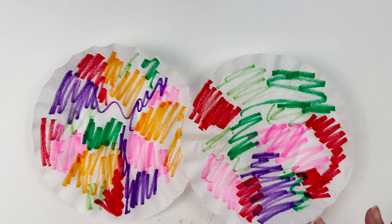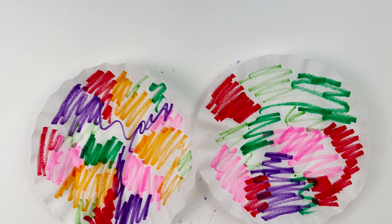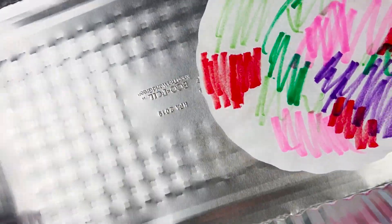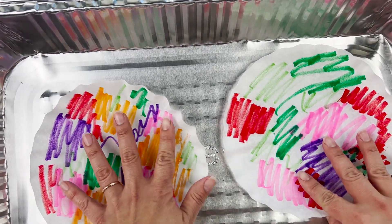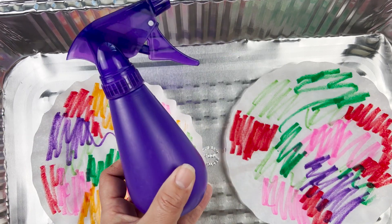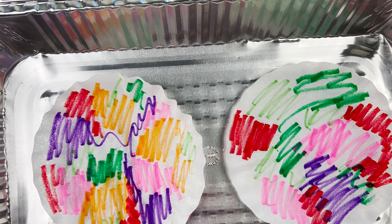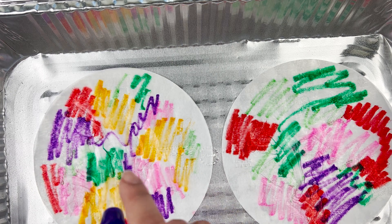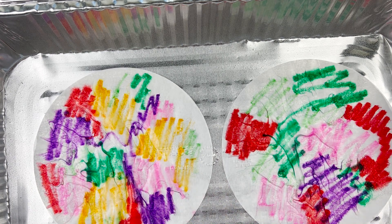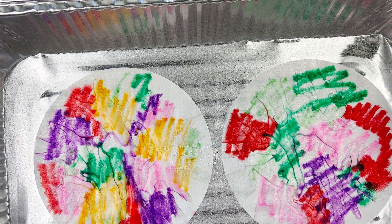Now you should have two very colorful coffee filters. That is when you take your tray to keep the mess in one place. Put it inside or put it over a plastic bag, something to protect your table. You're going to take your water squirter and just wet it. As the marker moves around, we're going to set this outside and let it dry.